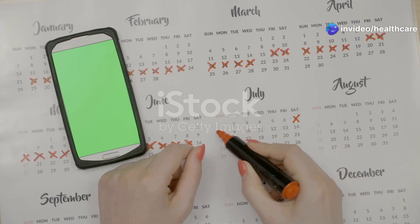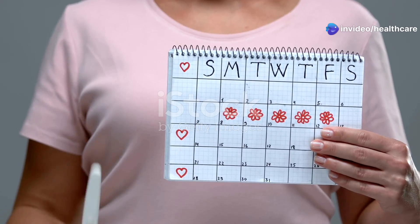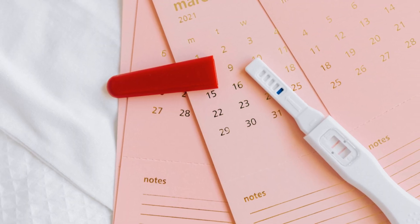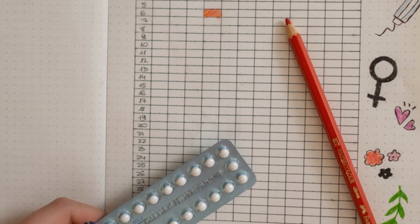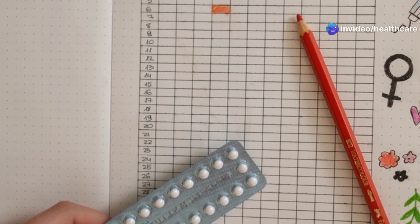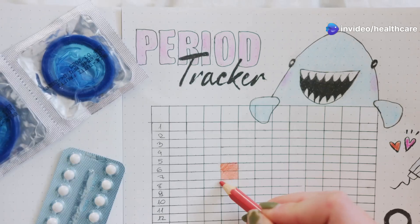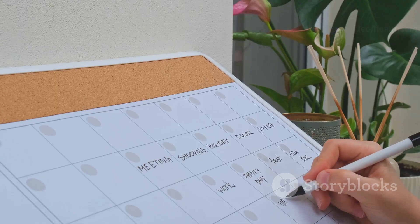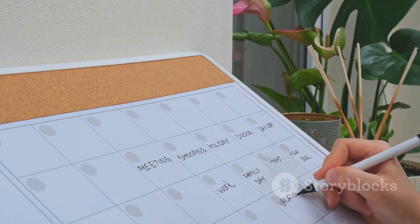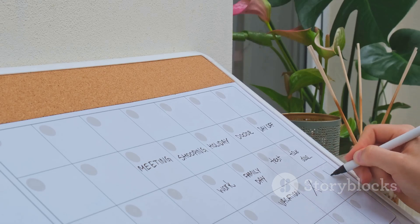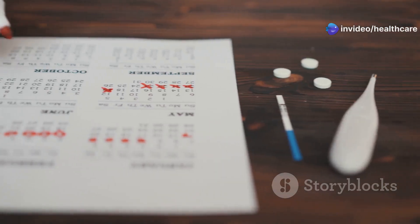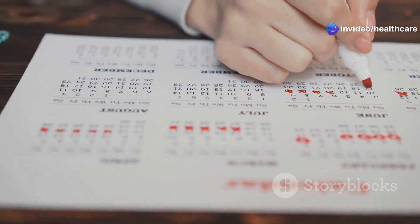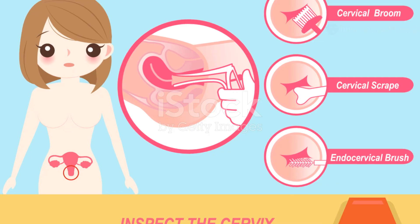There are several methods for tracking ovulation, each with its own pros and cons. One of the simplest is menstrual cycle tracking — by keeping track of your periods on a calendar or using a period tracking app, you can identify patterns in your cycle length. If your cycles are relatively regular, you can estimate your ovulation day based on the average length of your cycle.